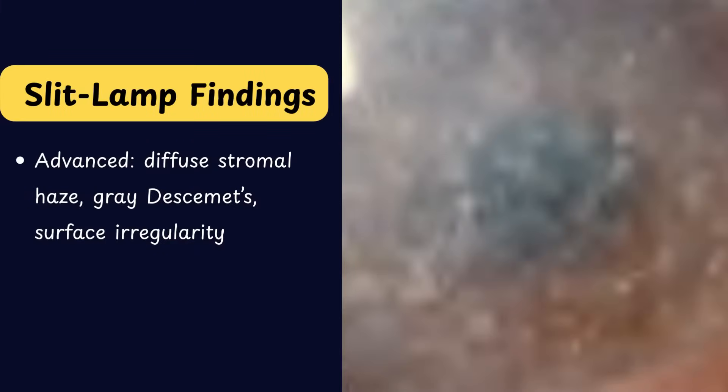In the advanced stages, the entire stroma becomes diffusely hazy and Descemet's membrane may also be affected, taking on a grayish appearance with an irregular corneal surface. These progressive changes explain why vision deteriorates steadily and why patients complain of increasing glare and photophobia over time in macular dystrophy.